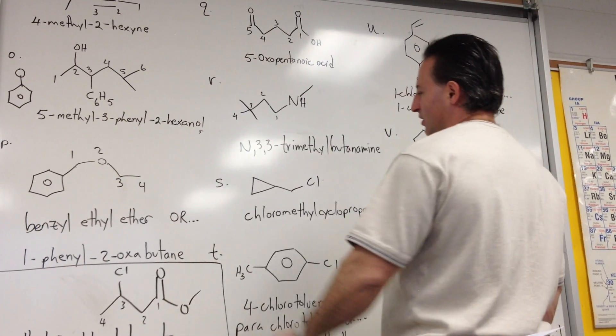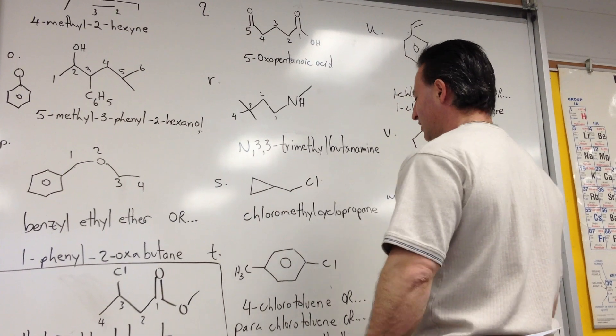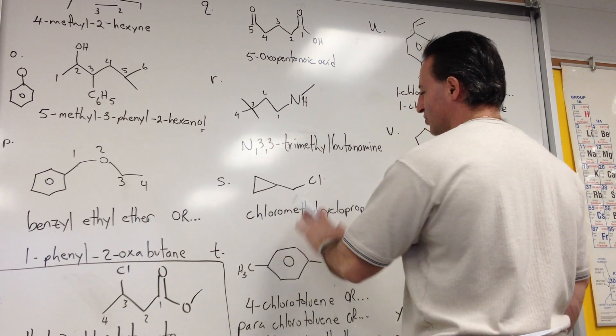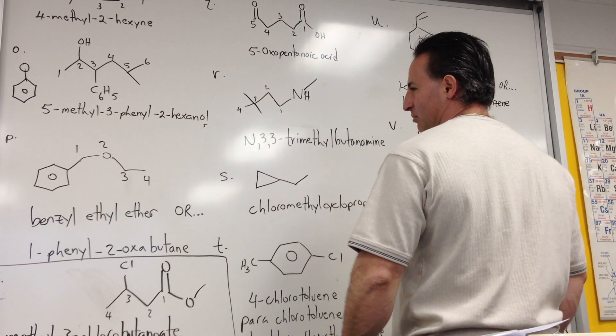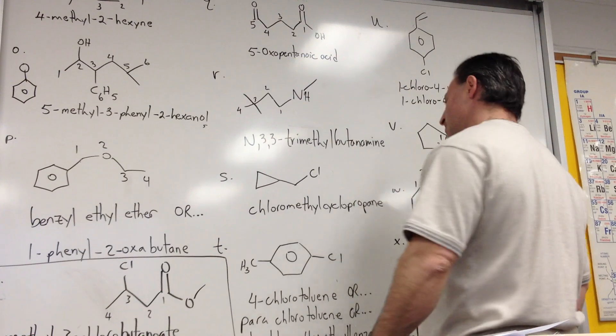This is a substituted cyclopropane. If there was no chlorine here, we'd call it methylcyclopropane, but because there is a chlorine on the methyl part, we'd call it chloromethylcyclopropane.